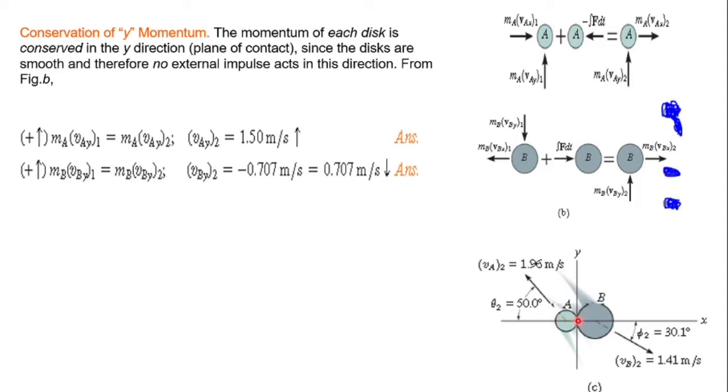The final velocity has x direction component and y direction component. We calculate the resultant from these components. The resultant gives us the final velocity magnitude and the angle with respect to the x direction.